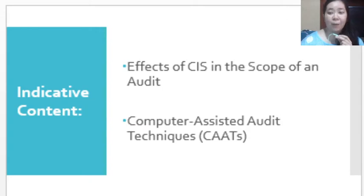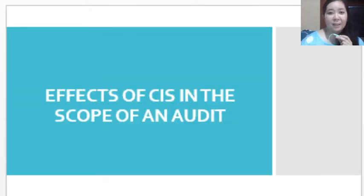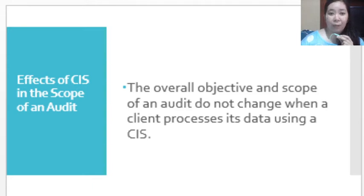For the contents, we have two major topics: CIS in the scope of the audit or its effect, and the computer-assisted audit techniques — the different or common types that are being used by the auditor. To start with, let us discuss the effects of CIS in the scope of the audit. The overall objective and scope of an audit normally does not change, especially when a client processes its data using a CIS. The audit objective is to gather sufficient appropriate audit evidences so that the auditor will have proof and support for the audit conclusion about the fairness of the presentation and preparation of the financial statements.